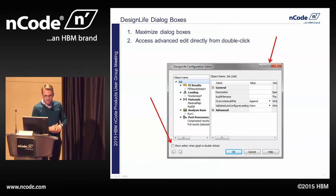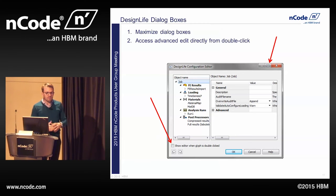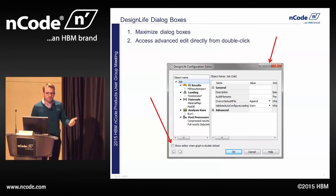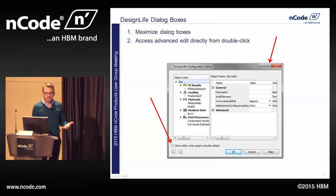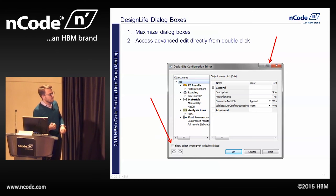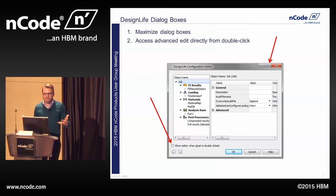We also have the ability to access the Advanced Edit directly by double-clicking. If you open your advanced configuration editor, you can check a little box, and then every time you double-click on your analysis list it will automatically bring up the Advanced Edit. No more accidentally double-clicking the glyph, ending up in regular properties, clicking back out, and then right-clicking to find Advanced Edit.